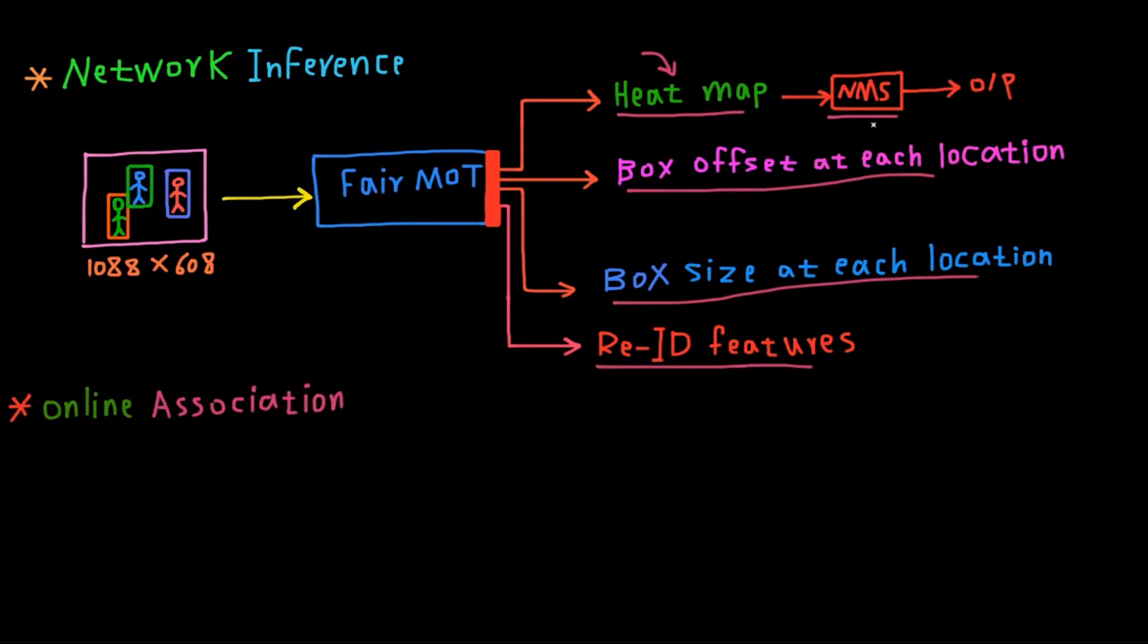So now we have the predicted centers of the objects in the image, and we have box offsets to correct the problem of downsampling and correct the position of these predicted centers. And we have box size for each predicted center. And the last thing, we have re-identification features for each predicted center, or in other words, we have re-identification features for each predicted object.